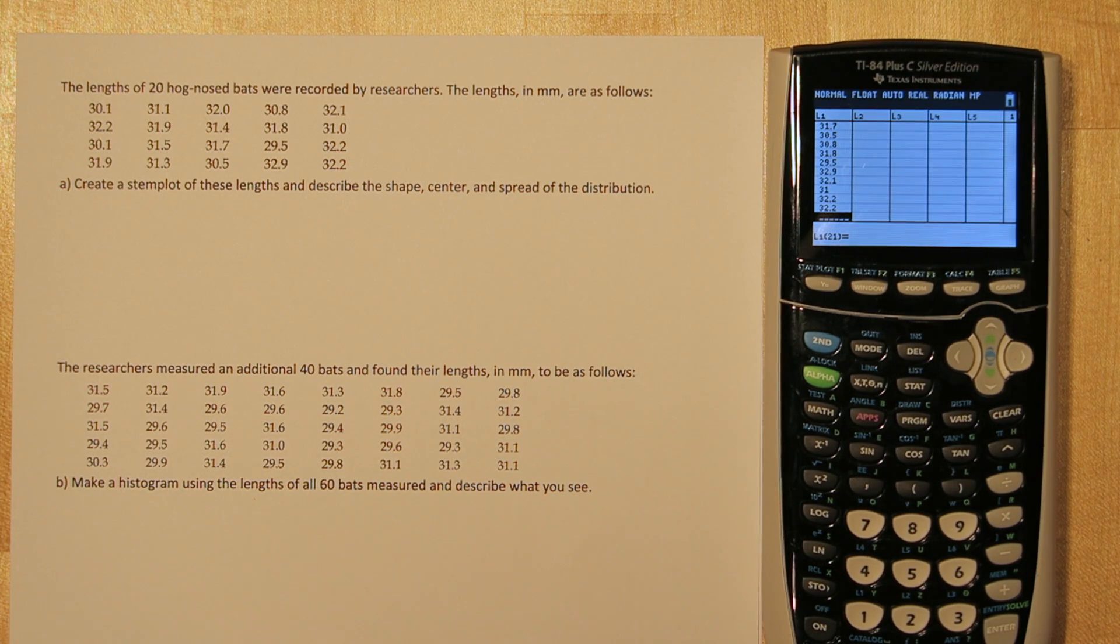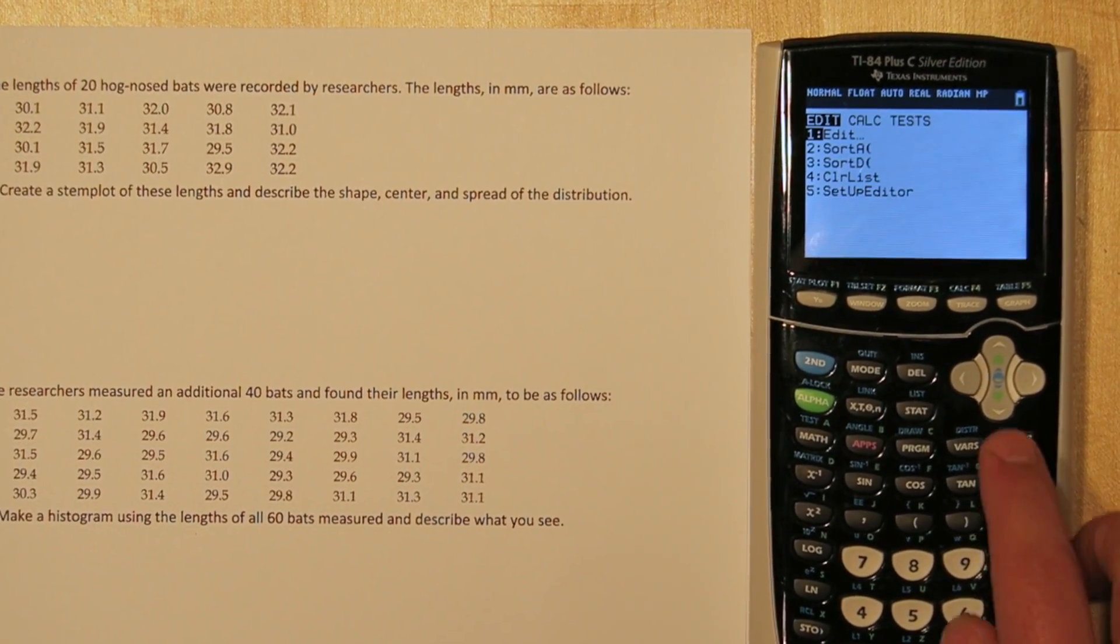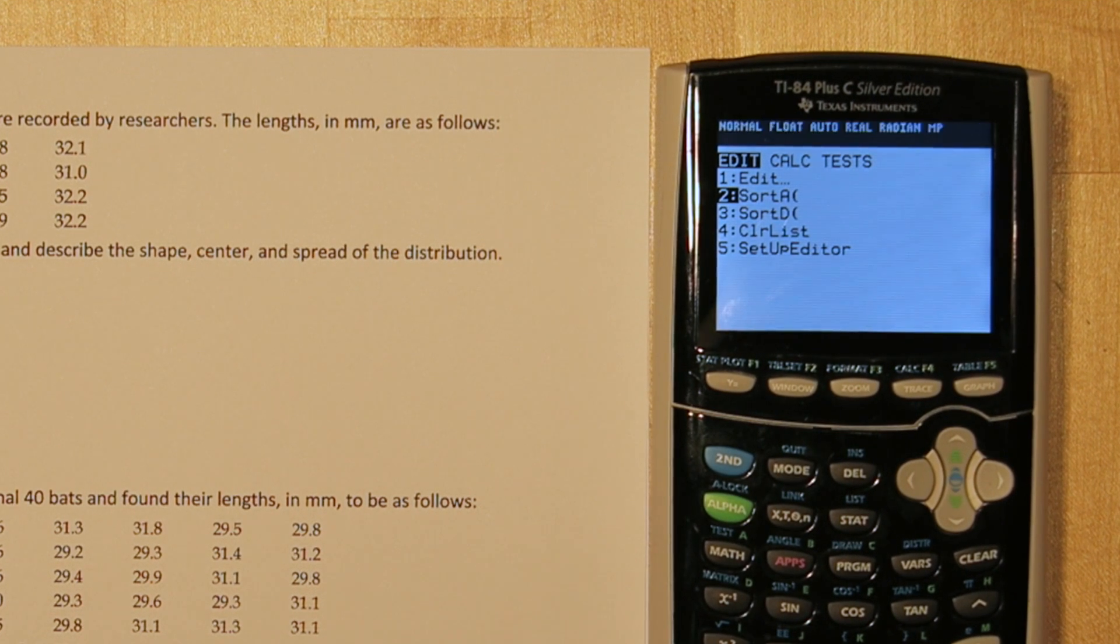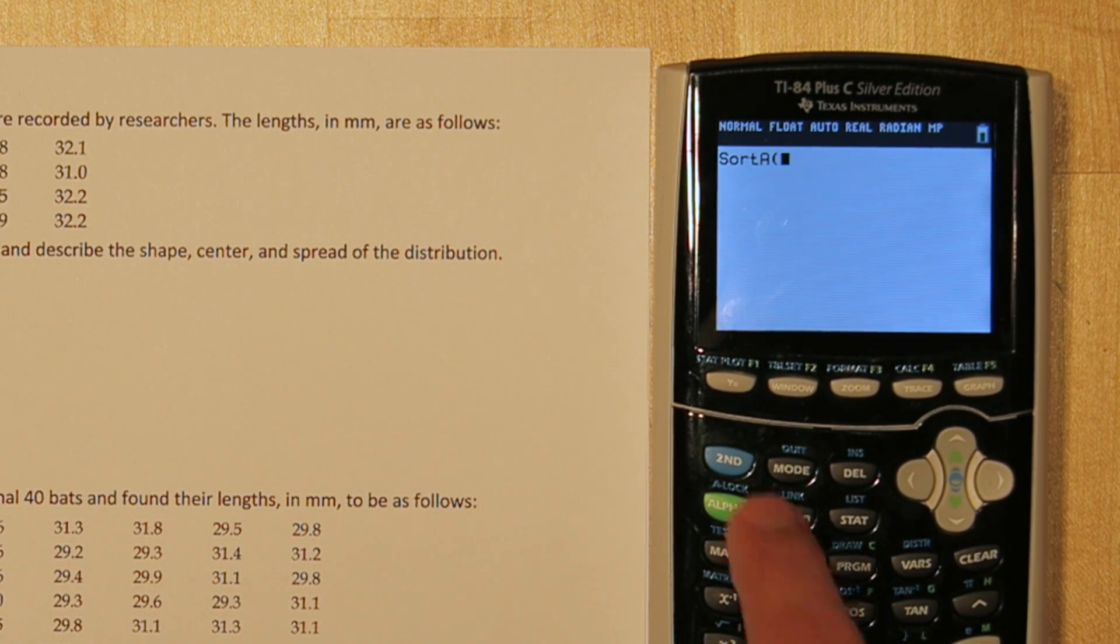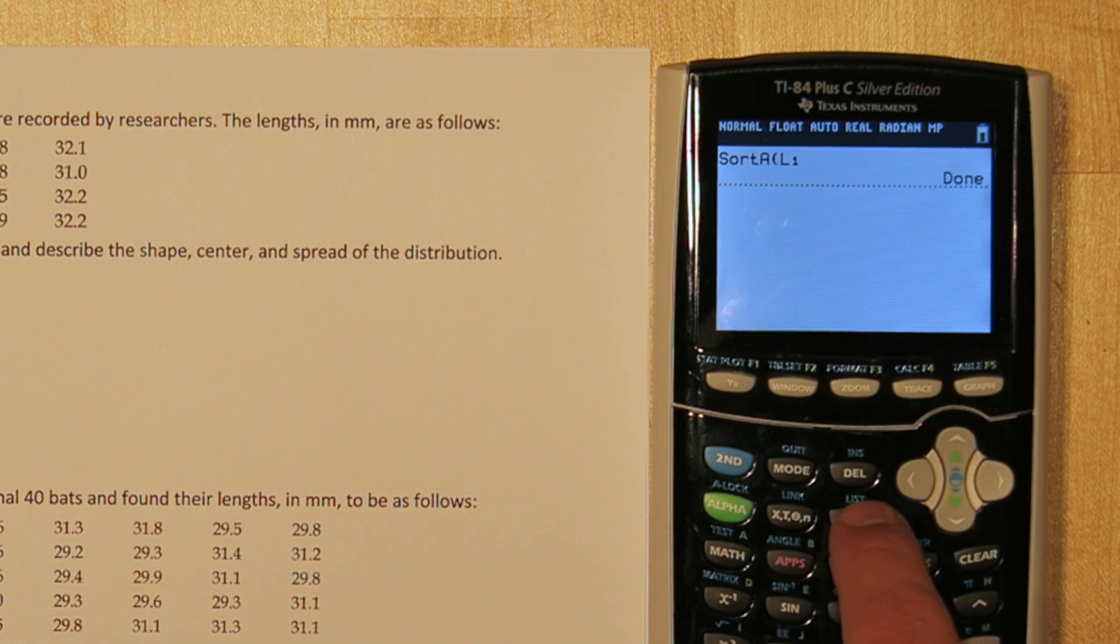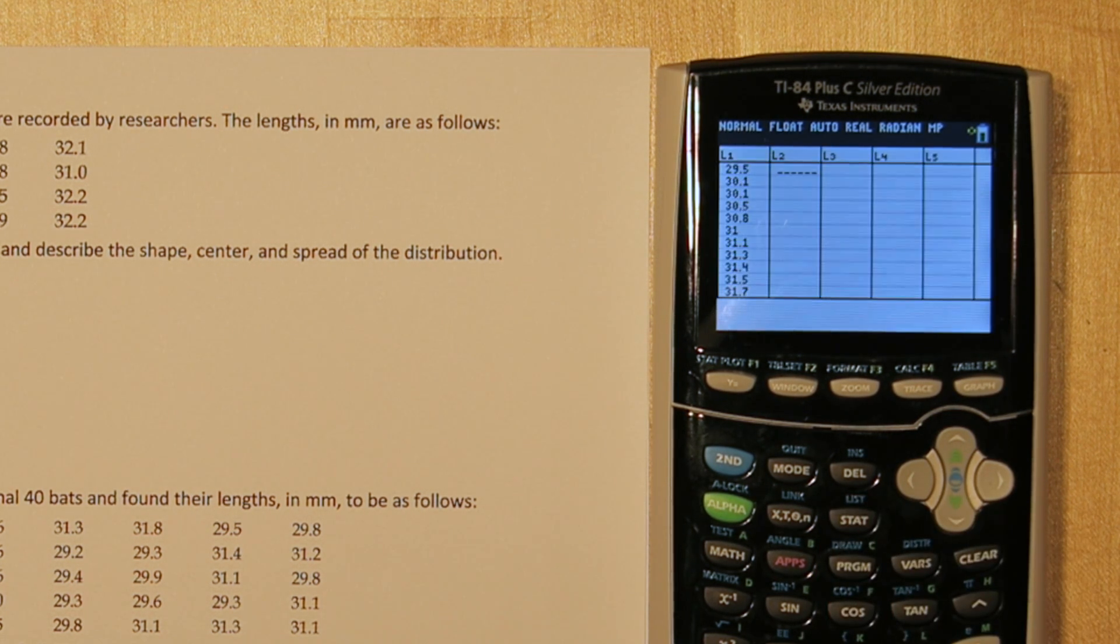Once you've input all the data, press the STAT button again and go down to sort A. This is sort in ascending order. Press ENTER, and it's going to say what do you want to sort. I'm going to press 2nd and 1, and that will put list 1 right there. Now when I press ENTER again, it says done. So if I press STAT and edit again, here's list 1, but now it's in order.